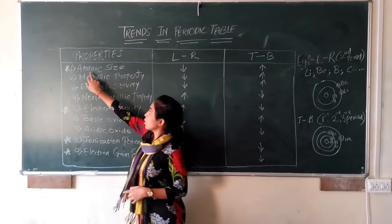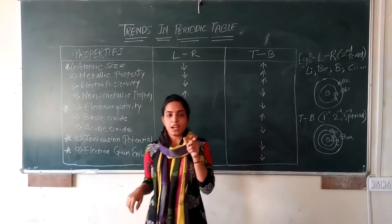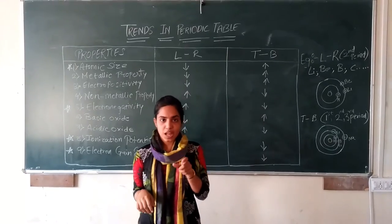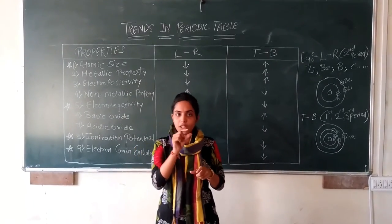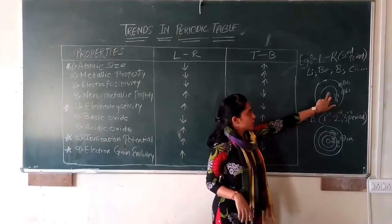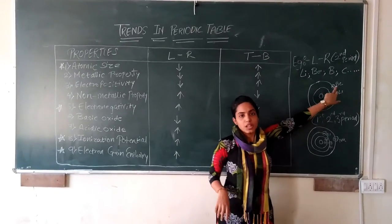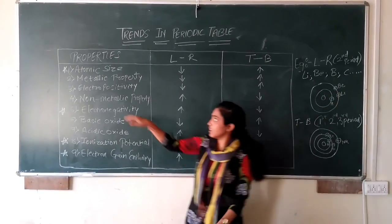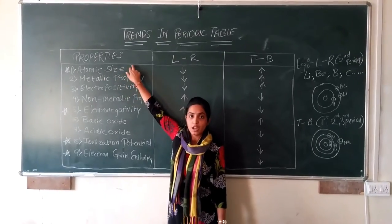First, we are going to study atomic size. Atomic size is the property defined as the distance from the nucleus to the outermost shell. The distance between the nucleus and the outermost shell is known as atomic size.